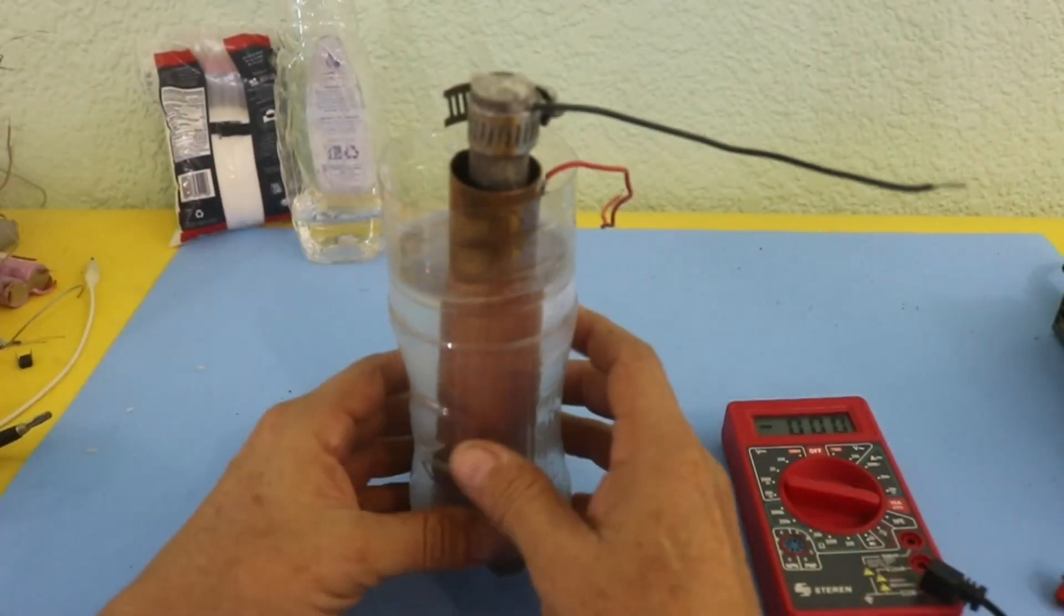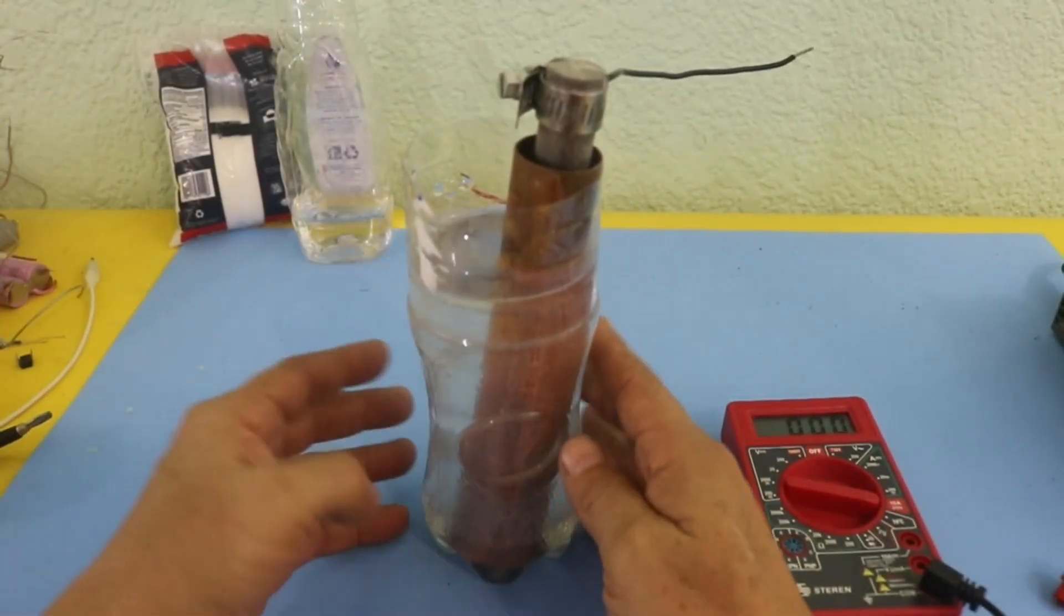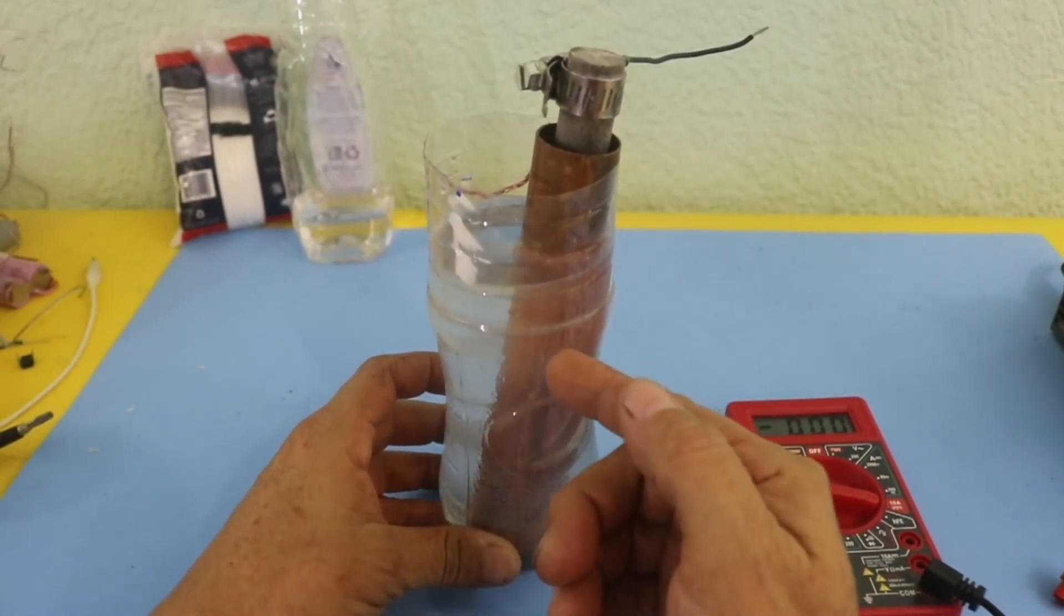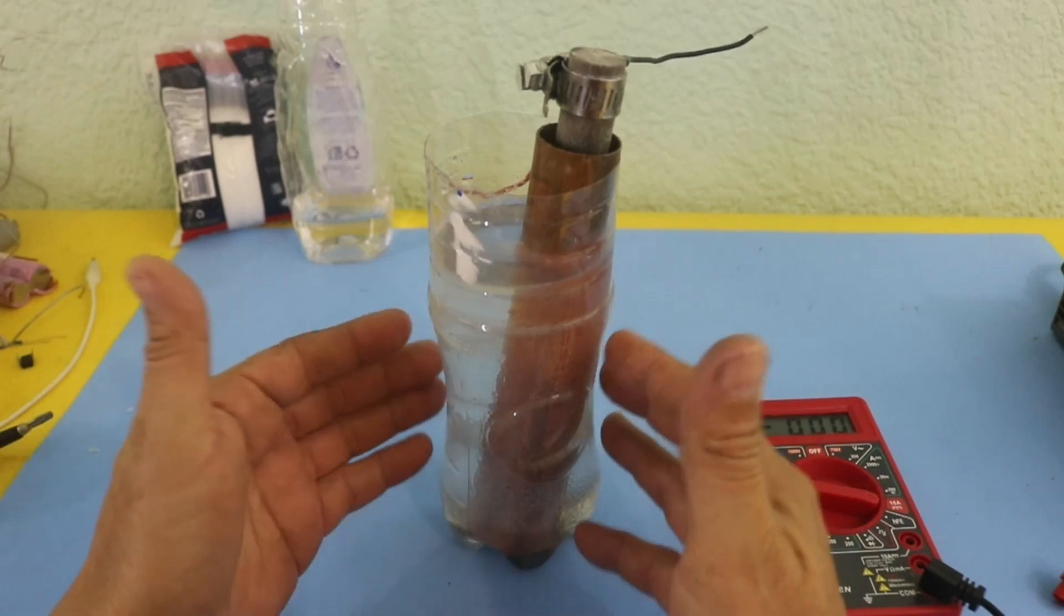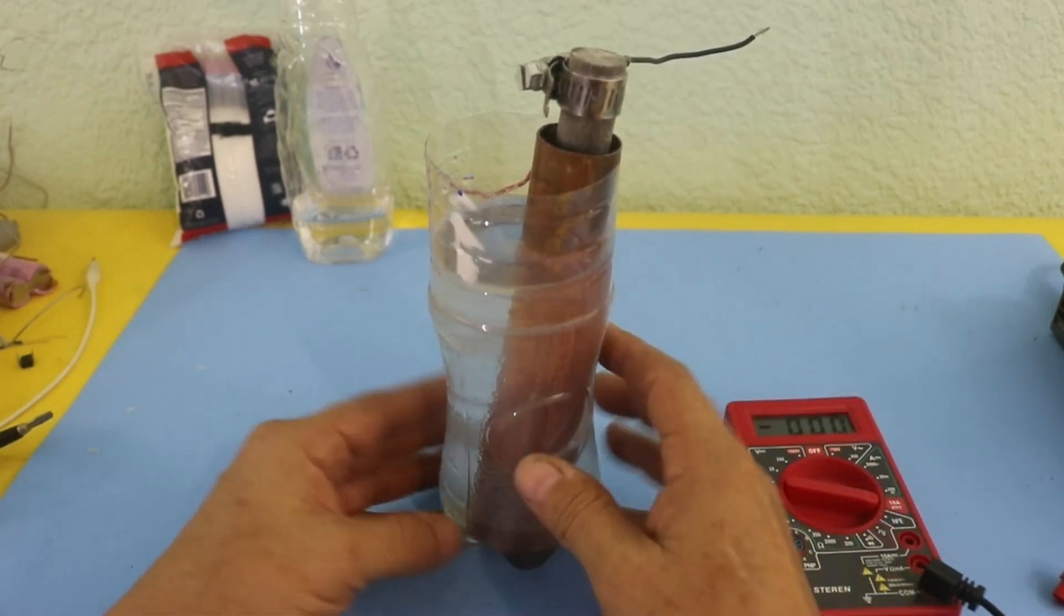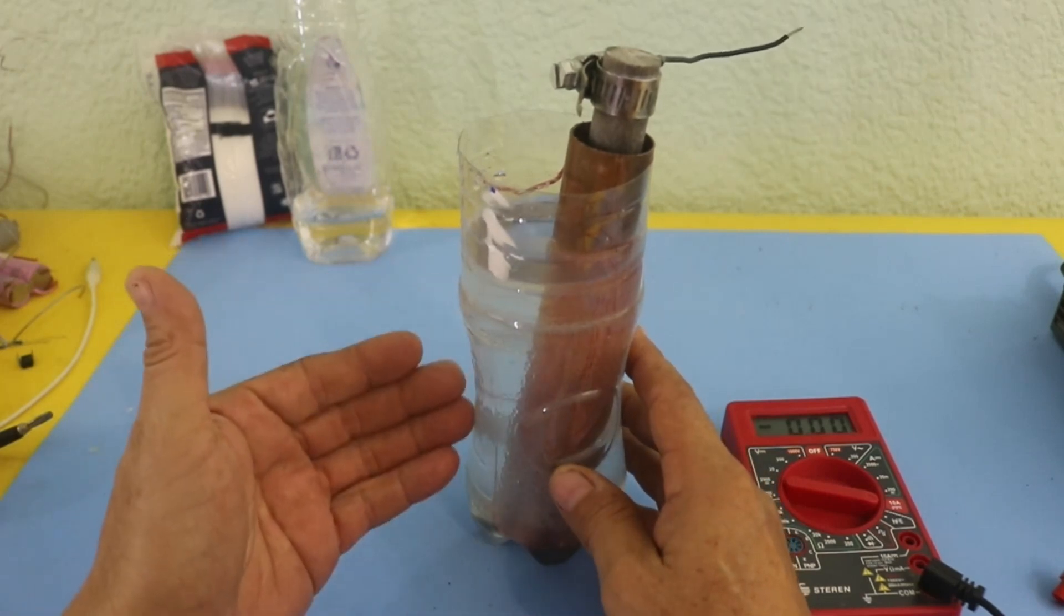Okay, here is the battery ready to test. I put the electrolyte. You need to add salt until you have a saturated solution, that is, you add salt and mix until no more salt is dissolved.